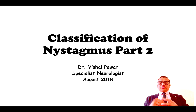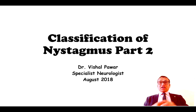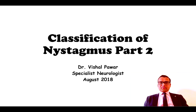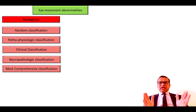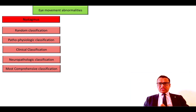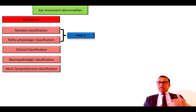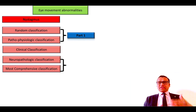Hello everyone. In this video, I will discuss the classification of nystagmus. This is part two of the video. I hope you have seen part one. As we have seen in part one, there are five different types of classification. I discussed the first two varieties in part one, and I am going to discuss the neuropathologic and most comprehensive classification. In this video, I will discuss the clinical classification.